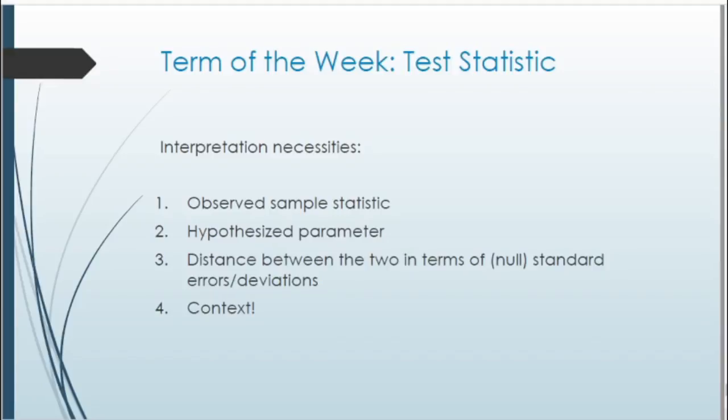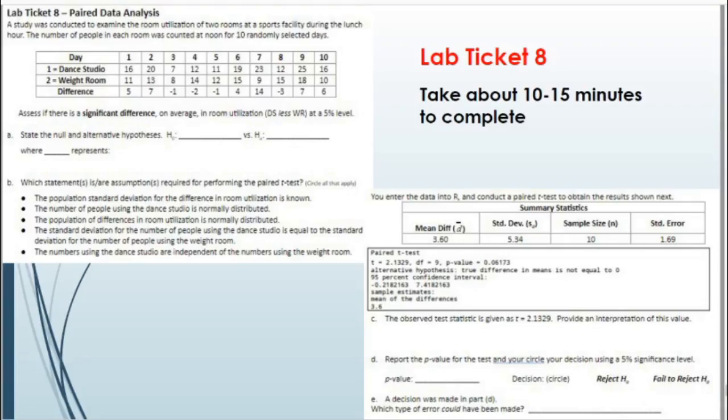For the test statistic interpretation, we always need the observed test statistic, the hypothesized parameter, and the distance between them expressed in standard errors or deviations depending on test type. And of course, always add context.